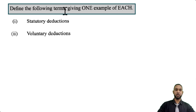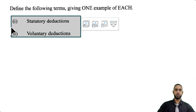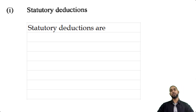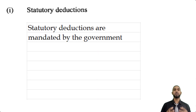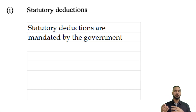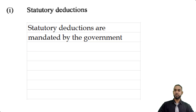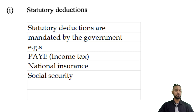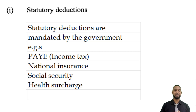Part A says to define the following terms, giving one example of each — statutory deductions and voluntary deductions. Statutory deductions are mandated by the government. Deductions are amounts taken out of your income, your pay, your salary. Statutory means government mandated — the government says you have to do this. Some examples: income tax, national insurance (sometimes also called social security), and health surcharge, which goes towards financing the public healthcare system.